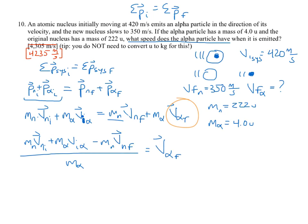Now remember, the unit U doesn't really matter — we don't need to convert to kilograms. If we pretend there are a thousand U's in a kilogram, then every mass term in the numerator and the denominator would be multiplied by the same factor of a thousand. Since you're doing the same thing to both numerator and denominator, the values don't change. That's why we can just use the values as they are.